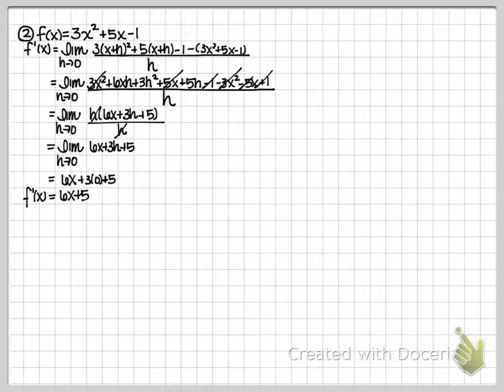You'll notice that I was very careful with my notation. I kept my limit as h approaches 0 the entire time until I actually plugged it in. And I showed all of my steps. So I get down to the point where I have 6x plus 3h plus 5. Now I feel comfortable plugging in the 0. I plug in the 0, the limit notation disappears, and I end up with 6x plus 5.